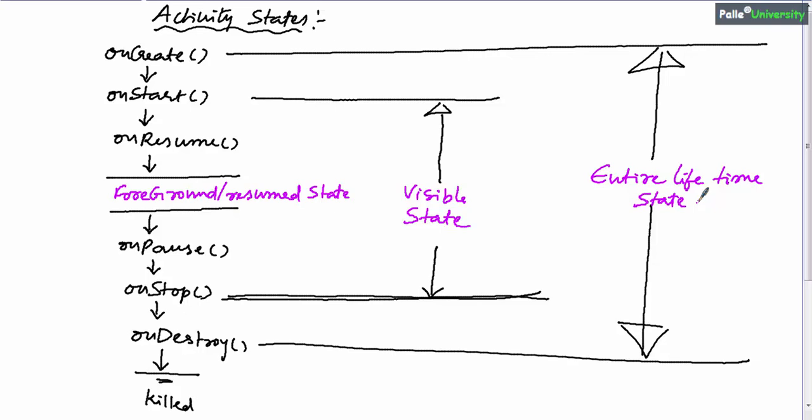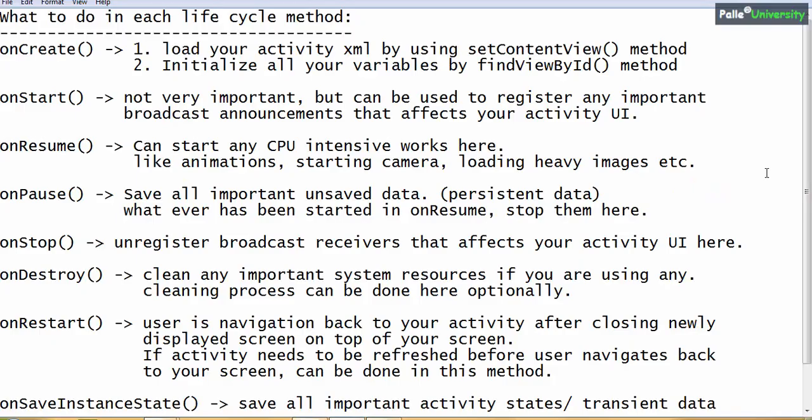Similarly, the time between onCreate and onDestroy is considered the entire lifetime state. onCreate is called only after creating memory for your activity object, and onDestroy is called just before removing your activity from memory. So your activity exists in memory between onCreate and onDestroy — after onDestroy it is removed from memory. These three are the activity lifecycle states.